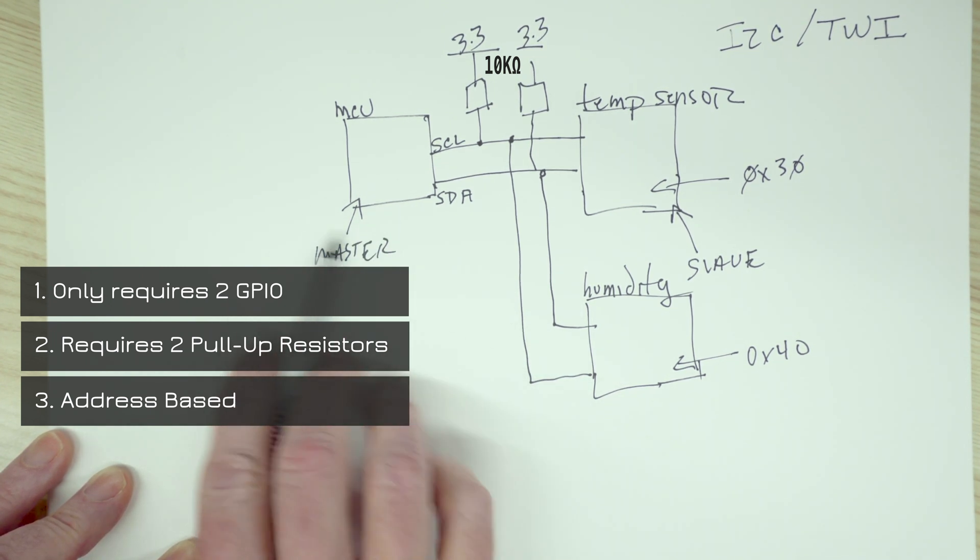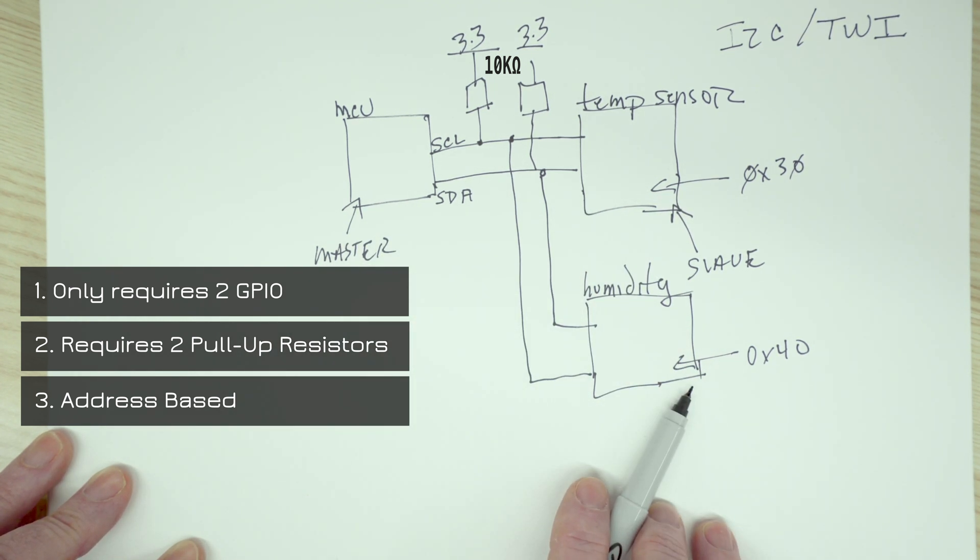And what happens is when the master, the microcontroller wants to communicate with, say, the humidity sensor, it puts out an address of 40 first. The temperature sensor stays off the bus, doesn't listen to any of the communication, and only the communication goes to the humidity sensor.